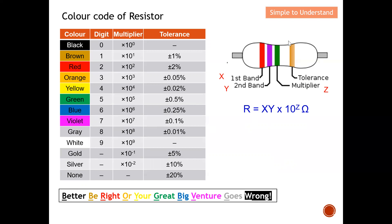This diagram shows the color code of a four-band resistor. The first band is the first digit, the second band is the second digit, the third band is the multiplier, and the last band is the tolerance. Typically the tolerance band will be either gold or silver. If there is none, it means a tolerance of 20%. If it is gold, the tolerance is ±5%, and if it is silver, the tolerance is ±10%.